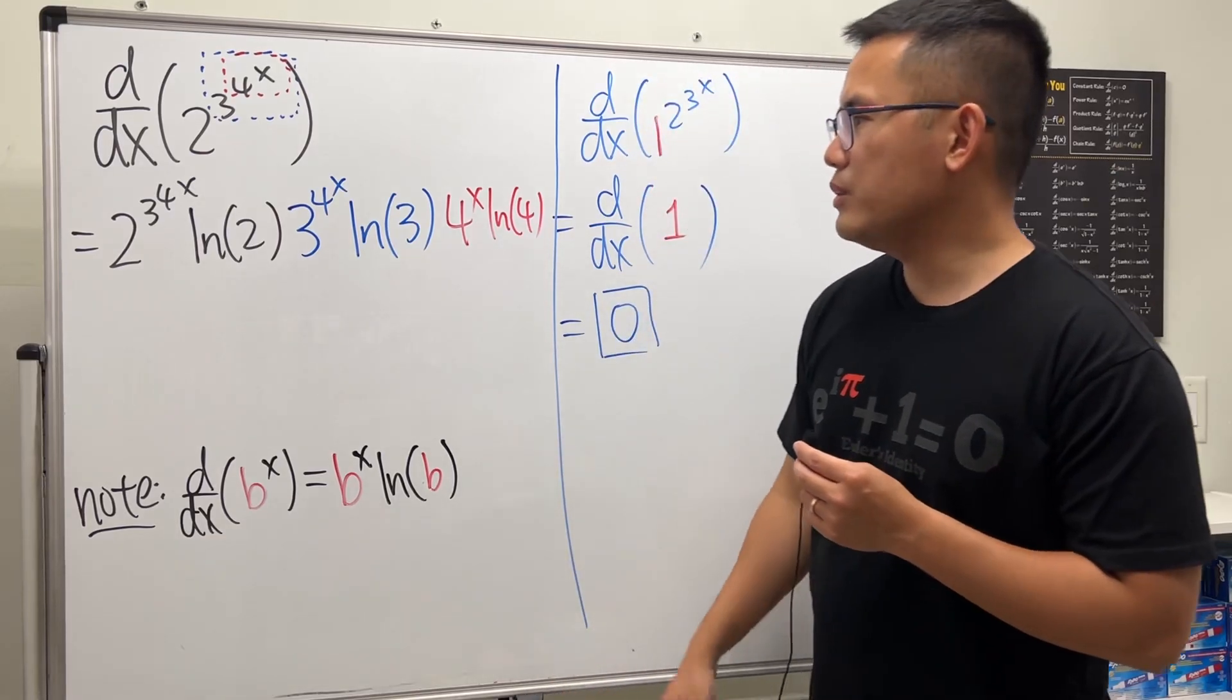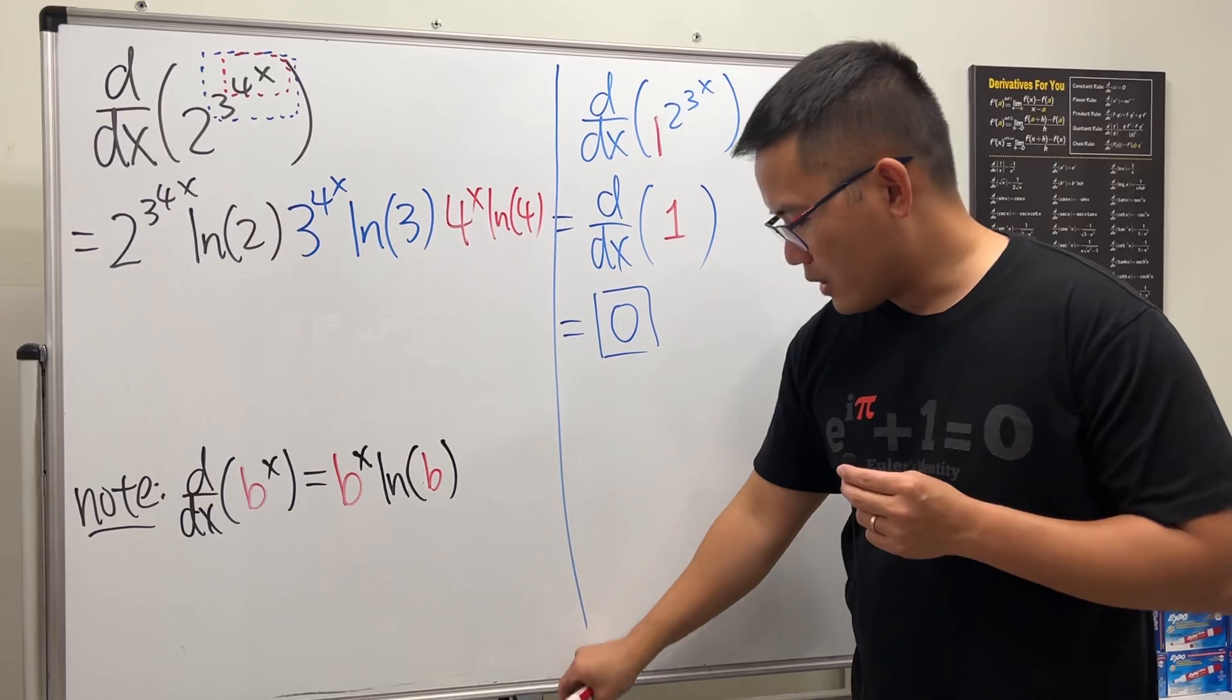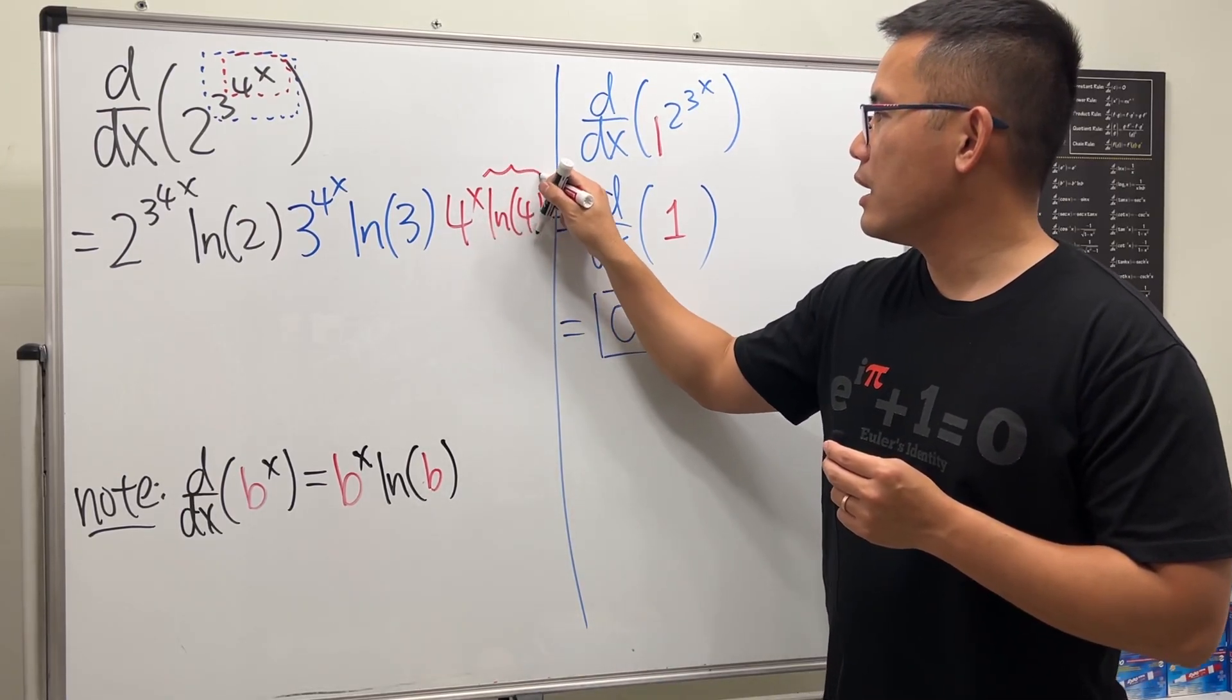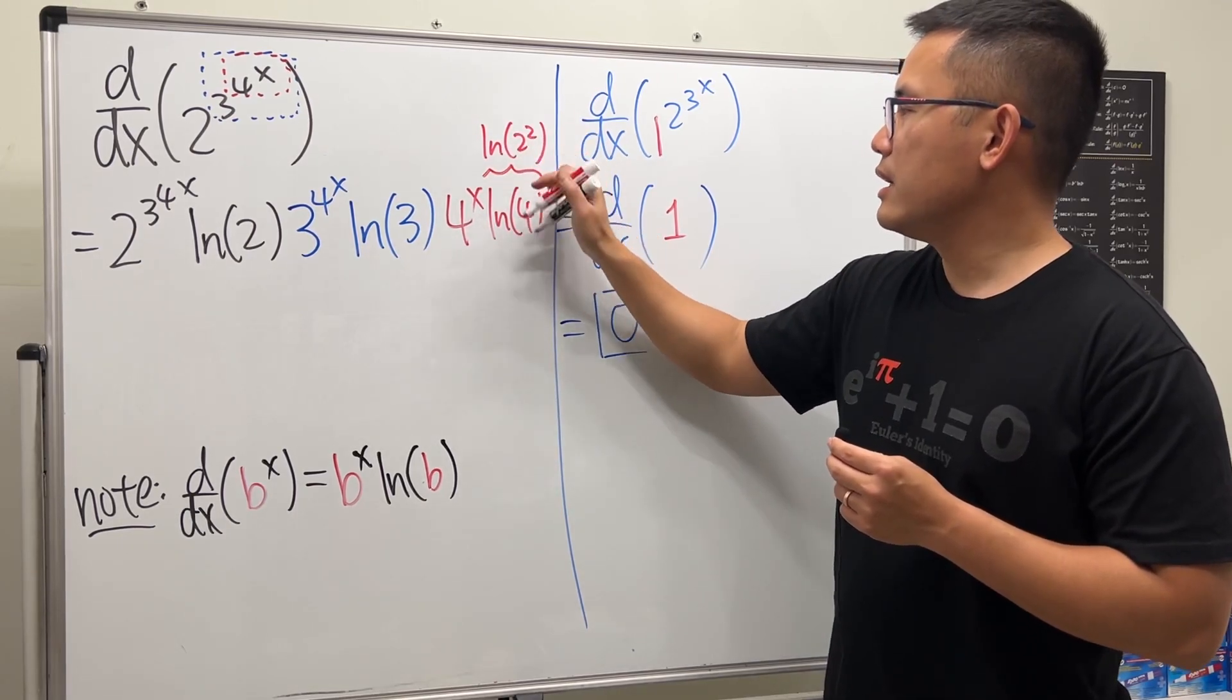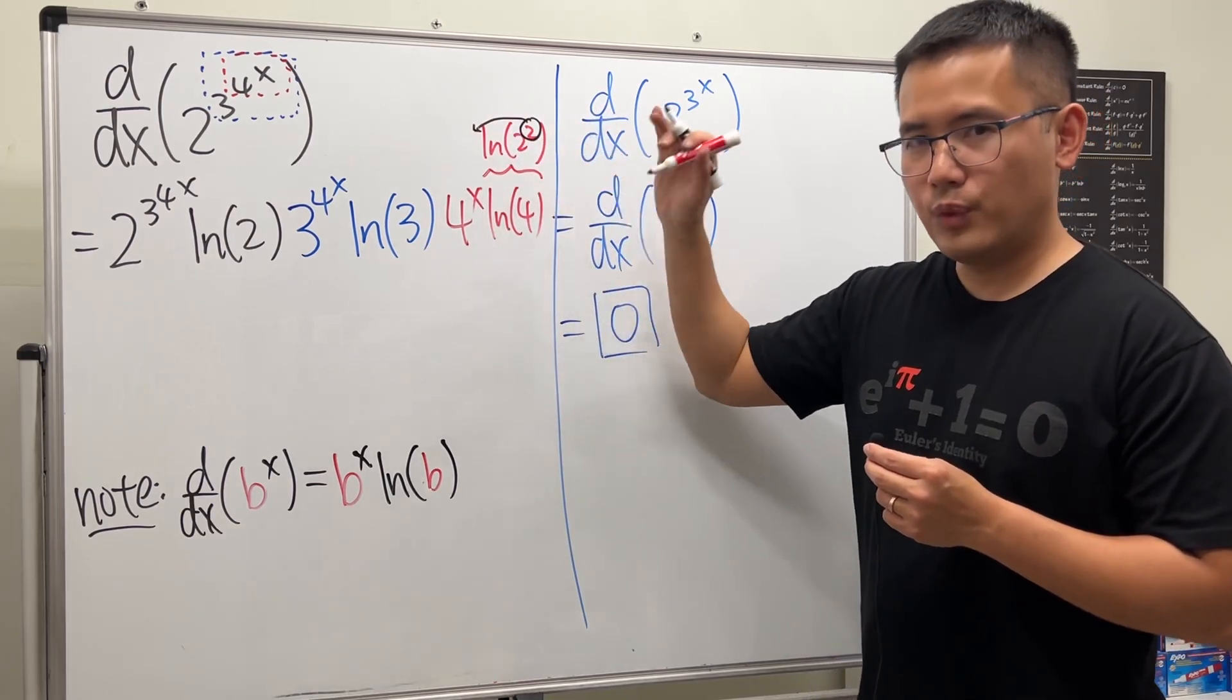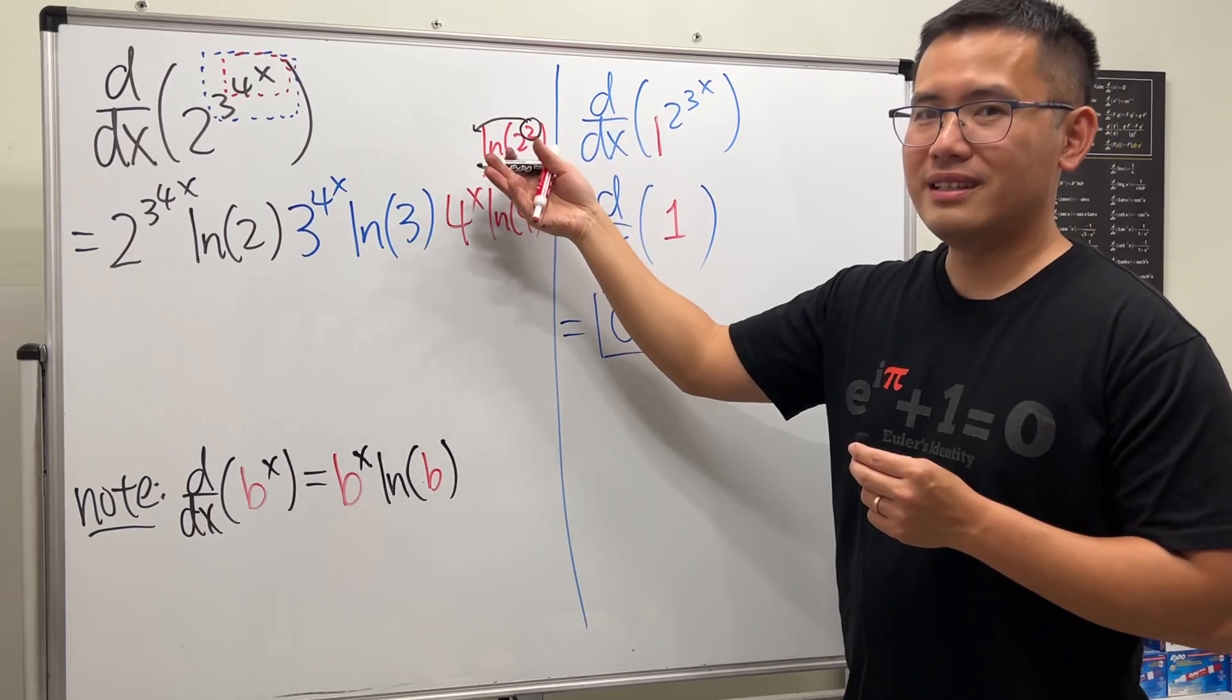But if you would like, you can also simplify this just a little bit. Because for the very last part, ln 4 is the same as ln of 2 to the second. And then we can put the exponent to the front. We're just using the rule of the natural log, it's a property, it's not the power rule.